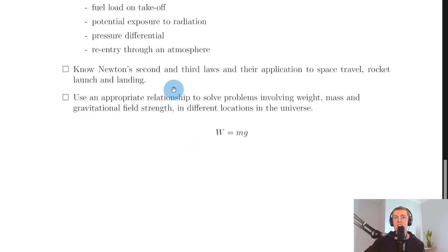Next, you need to know Newton's second and third laws and their application to space travel, rocket launch, and landing. So Newton's second law remember refers to the idea that if a mass has an unbalanced force acting on it, then it's going to accelerate in the direction of that unbalanced force—or you can just think about the equation F equals ma. You also need to be able to use that equation F equals ma in different rocket situations. And then Newton's third law remember says that for every action there's an equal and opposite reaction.